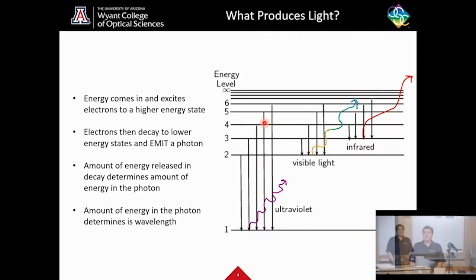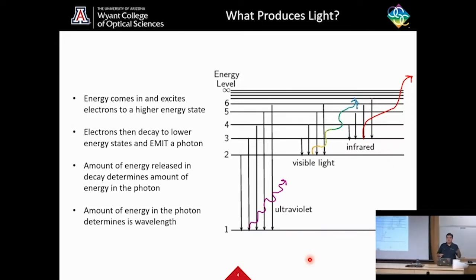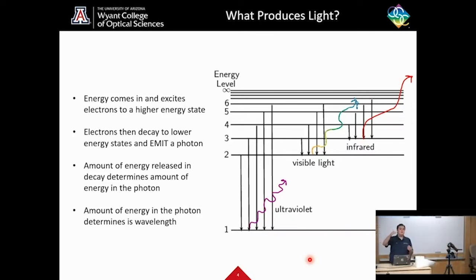So you might be asking, what produces light? What's the physical phenomenon that is causing what we're seeing? Here I have a diagram showing different energy levels. What happens is energy comes into an atom and excites an electron to a higher energy state. Eventually this electron is going to want to decay and drop down to a lower energy state. When it does this, one of the things it gives off is light.